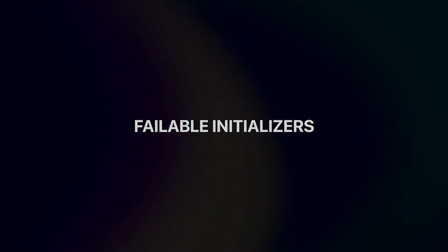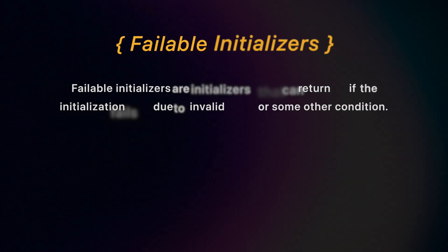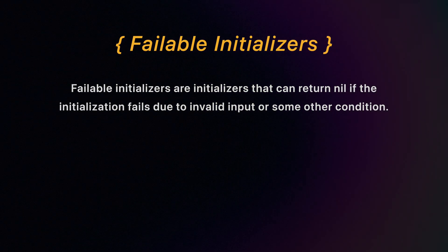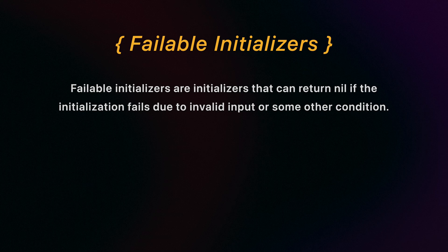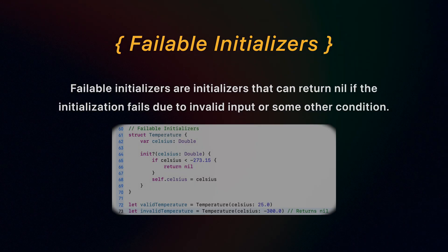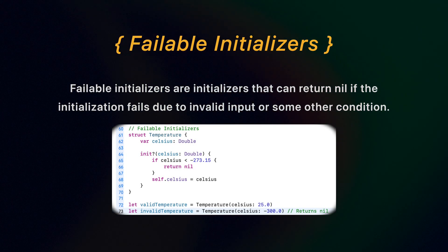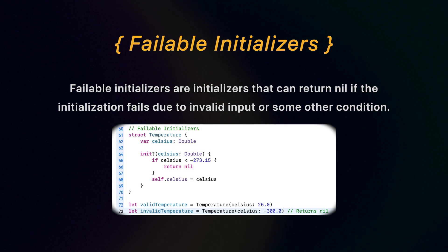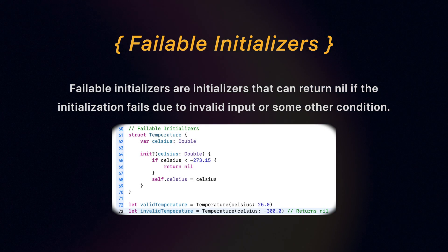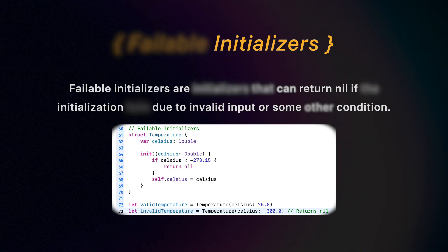Failable initializers. Failable initializers are initializers that can return nil if the initialization process fails due to invalid input or some other condition.